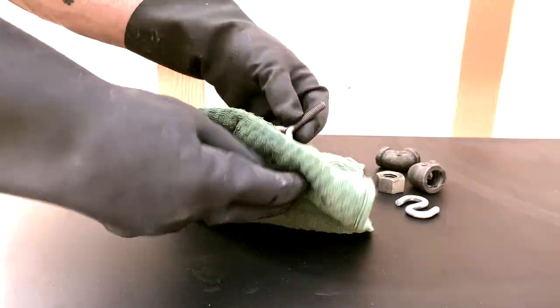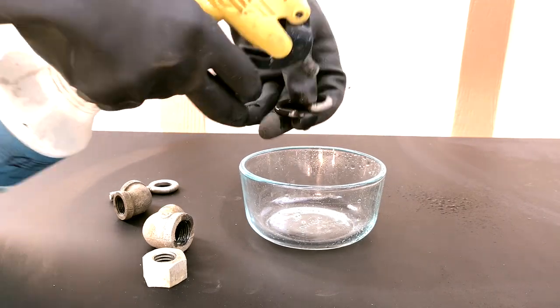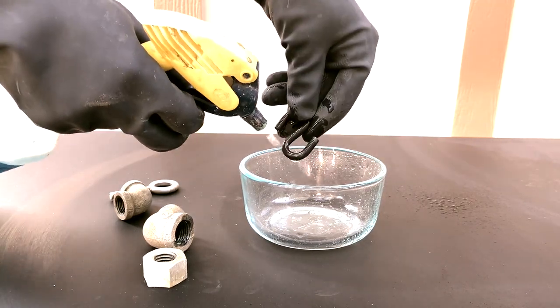After the parts are rinsed clean with water and dried, we can create a layer of black iron oxide on the surface using gun bluing solution.